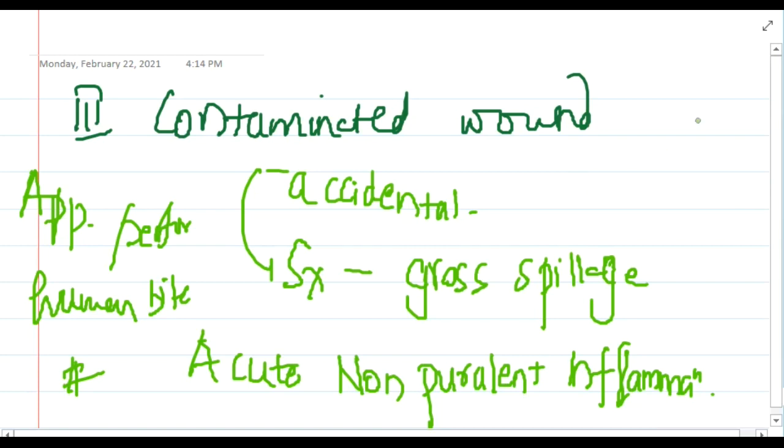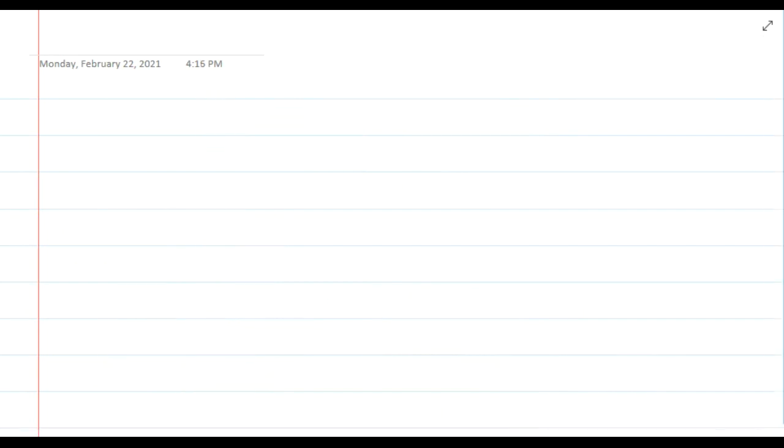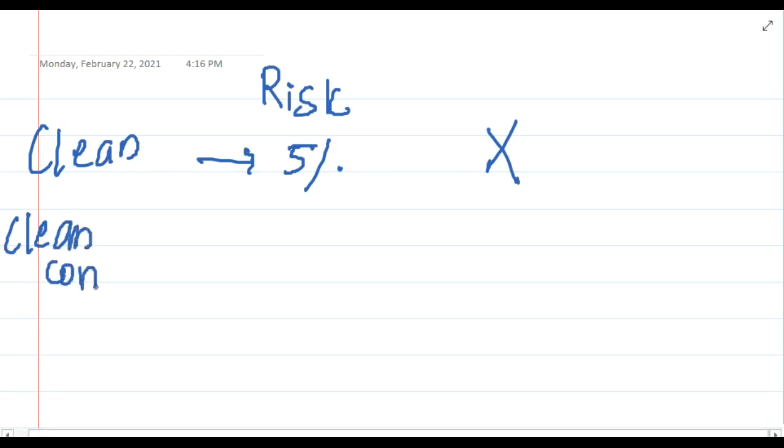Now we will learn about the percentage of risk of infection. Clean wounds have 5% risk of infection and no antibiotic prophylaxis is usually required.